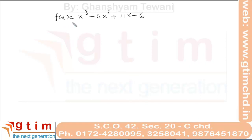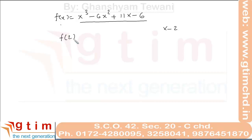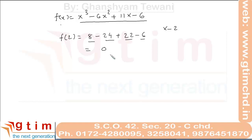For example, prove that f(x) equal to this cubic polynomial is divisible by x minus 2. One simple way is to directly divide by x minus 2, but with the help of the Factor Theorem we find the value of f(2). f(2) equals 8 minus 6 times 4 — that is 24 — plus 11 times 2, which is 22, minus 6. This gives 30 minus 30, so f(2) equals 0, meaning x minus 2 is a factor of f(x).